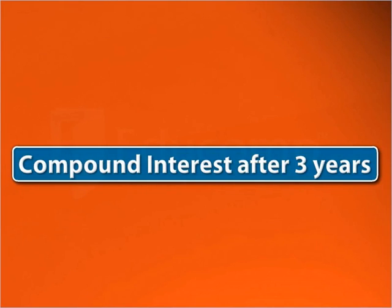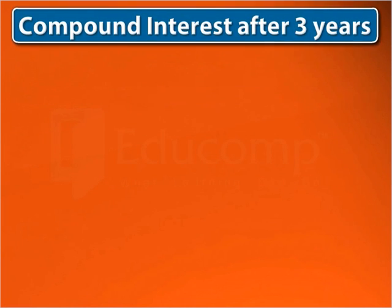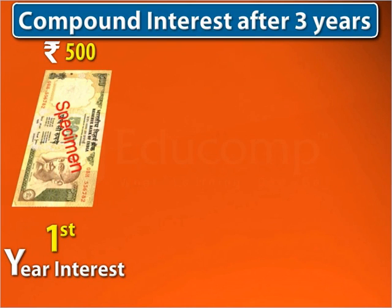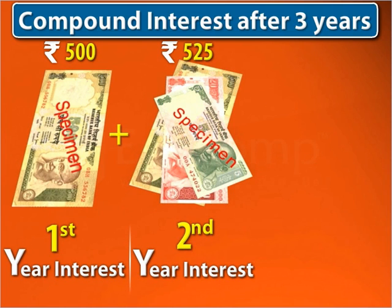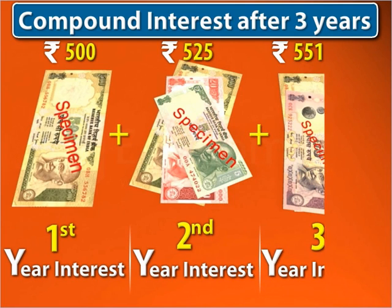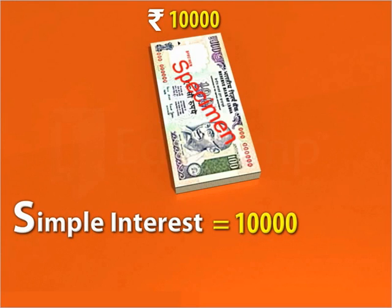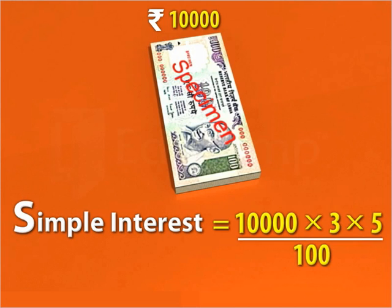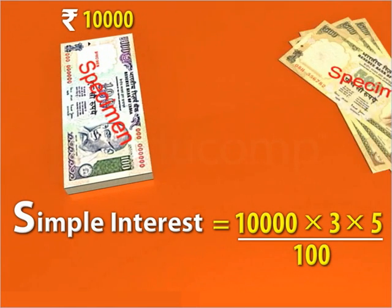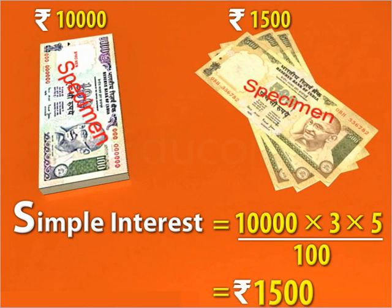Now, the compound interest earned after 3 years is equal to the compound interest earned in the first year plus the compound interest earned in the second year plus the compound interest earned in the third year. If you find the simple interest on 10,000 rupees for 3 years at 5% per annum, it comes out to be 1,500 rupees.